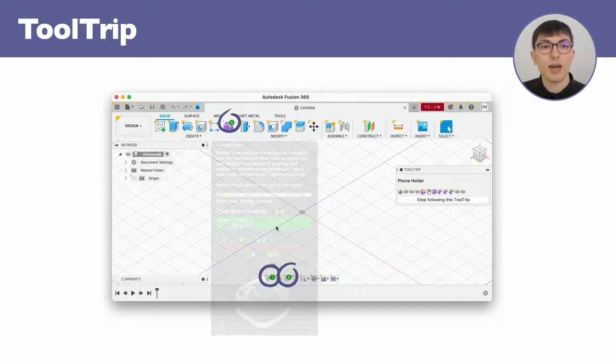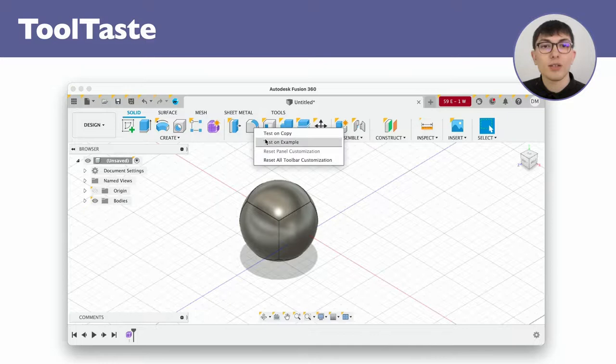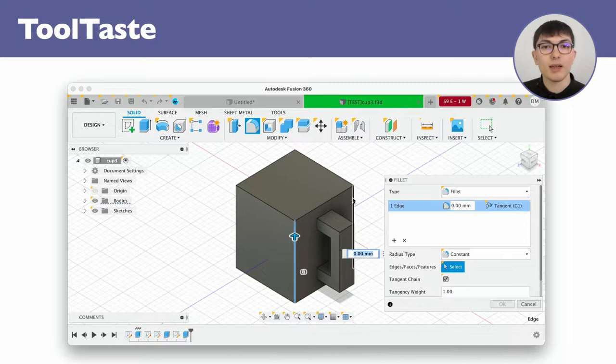Finally, ToolTaste lets users rapidly and safely experiment with commands. When right-clicking a command, users can choose between testing the command on a copy of the current document or on an example specifically designed for this command. Modifications can then be merged into the main document or discarded, letting users decide if the command is relevant.